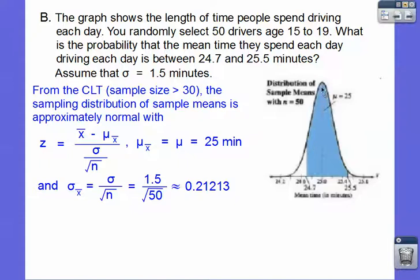So that's our mean right here. Our mean was 25 minutes. And we want to know between 24.7, which is to the left of 25, and then 25.5, which is to the right of 25. So here's our mean time in minutes. This says the distribution of sample means with n equal to 50. Sample means, means plural. So we're doing several sample sizes with n equal to 50. If we do that, our central limit theorem allows us to normalize this. So here we go.